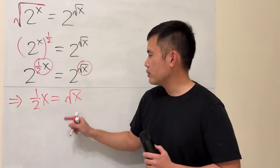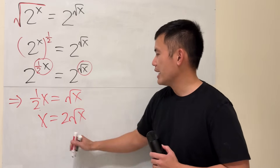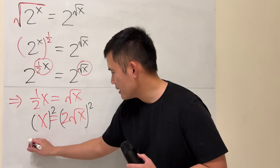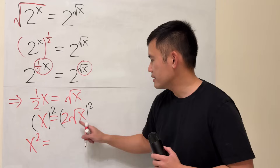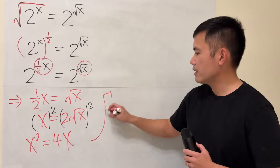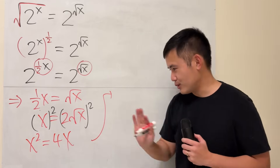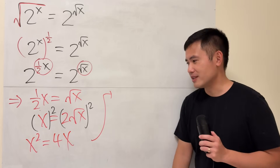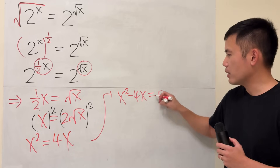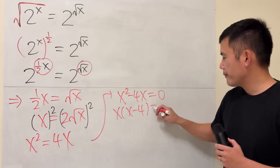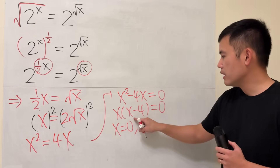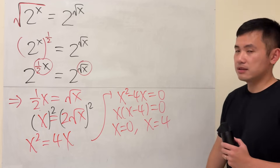Multiply both sides by 2: x equals 2 times the square root of x. Then square both sides to get rid of the square root. The left-hand side gives us x squared, and the right-hand side gives us 4x, since 2 squared is 4 and the square root cancels. Now move 4x to the other side — and do not divide both sides by x, otherwise you lose the solution x equals 0. We get x squared minus 4x equals 0. Factor out x: x times (x minus 4) equals 0. So either x equals 0 or x equals 4.